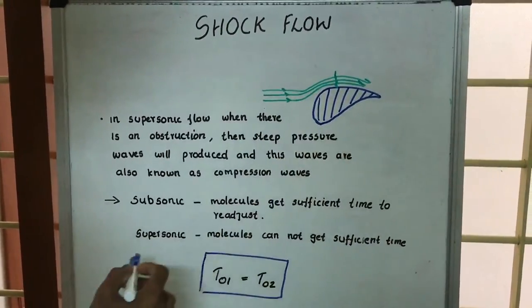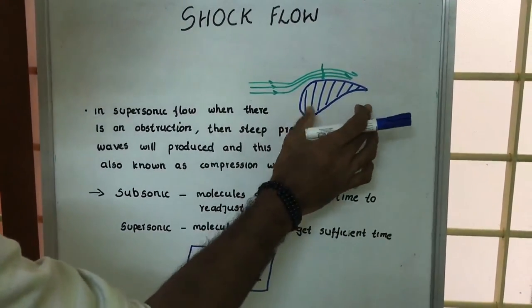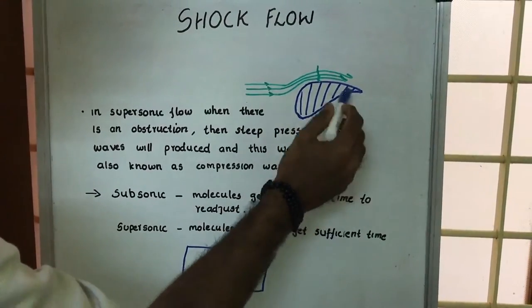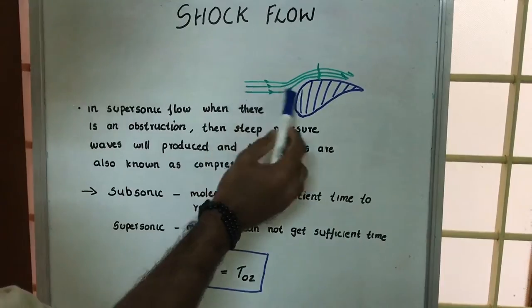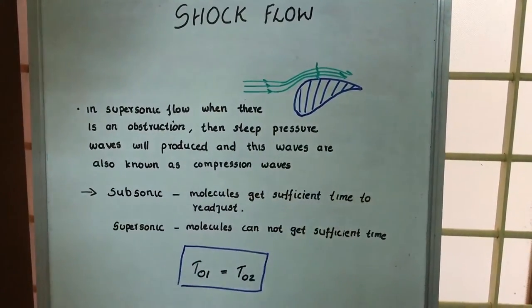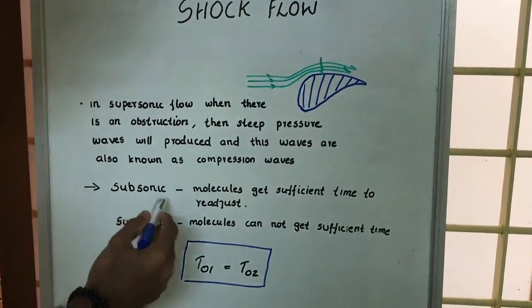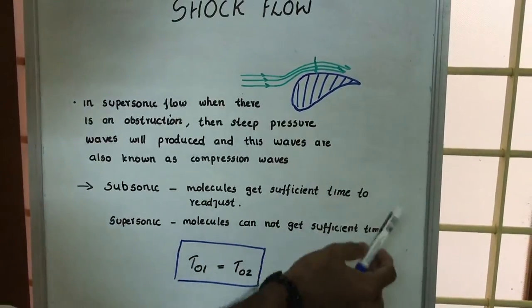Here you can see that this material gives an obstruction to the flow lines. The green line represents the flow lines. In subsonic flow, molecules get sufficient time to readjust themselves.